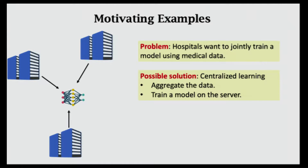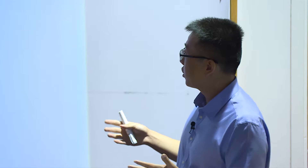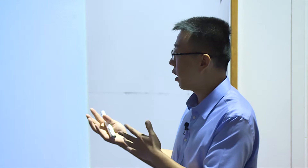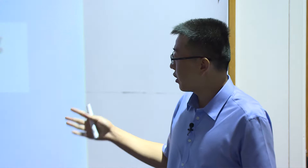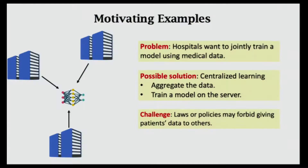Another example: consider several hospitals that want to jointly train a model. A jointly trained model is of course better than a model trained using one's own data, so they have motivation to collaborate. A possible solution is centralized learning—they can aggregate the data, give it to one hospital or a third party, and train a model on the server. The challenge is also privacy: laws or policies may forbid giving patients' data to others, so patients' data may not be allowed to leave the hospital.